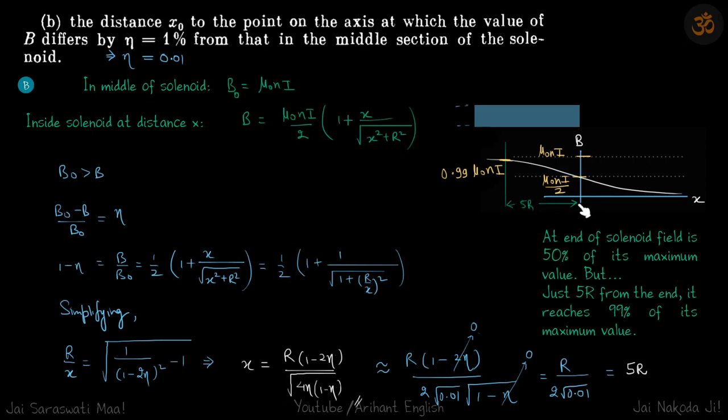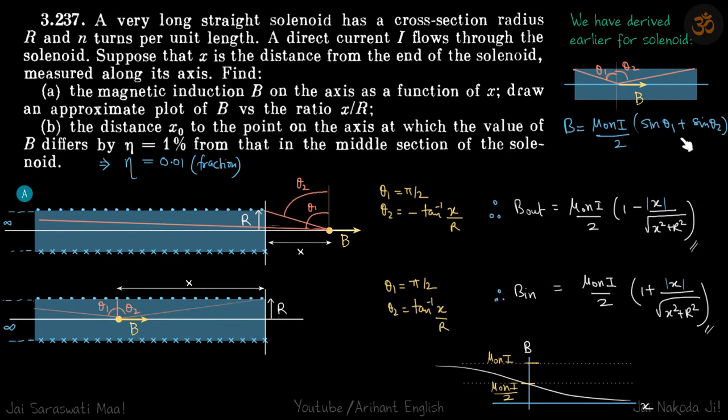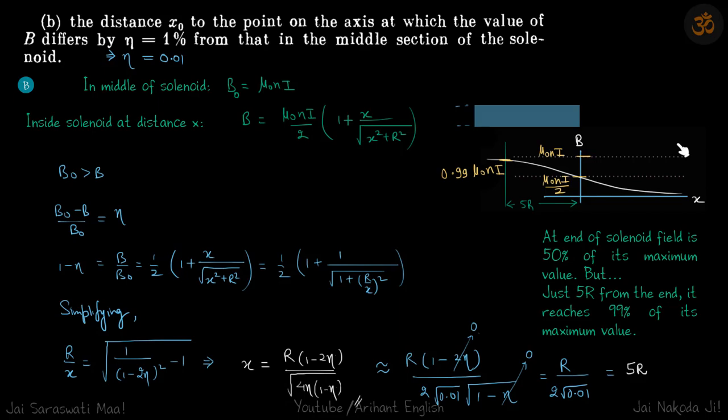Just at a distance 5r from the edge the field reaches 99% of its maximum value. At end of solenoid field is 50%, and within a distance of 5r from the end it reaches 99% of its maximum value. For all practical purposes within distance of 5r we can take the field as mu naught ni. These are the answers of our two problems. Thank you.